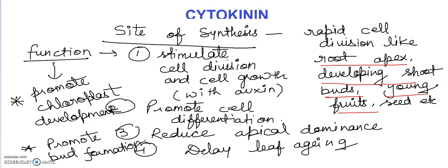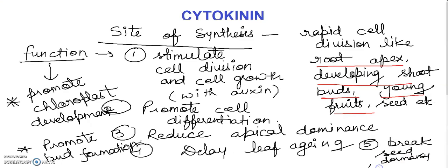These are some of the functions of cytokinin. Its site of synthesis I have told you. Seed dormancy it will also break. If you haven't written this point, you can add this point. It will break seed dormancy as a fifth function, but in some seeds only, not in all plants.